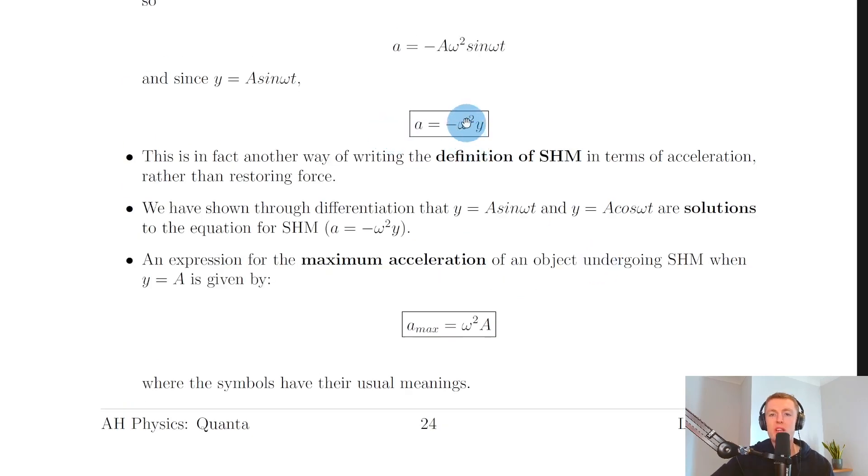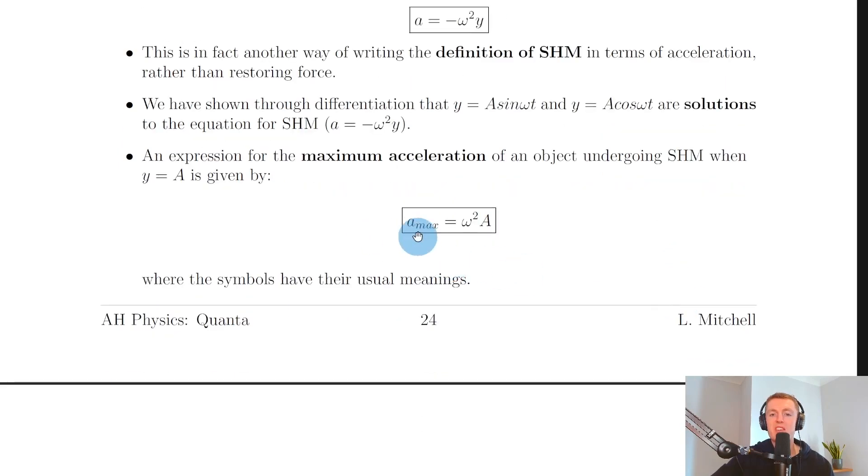So we have a equals minus omega squared y in general. And then for the maximum acceleration, we have omega squared a, where the symbols have their usual meanings.